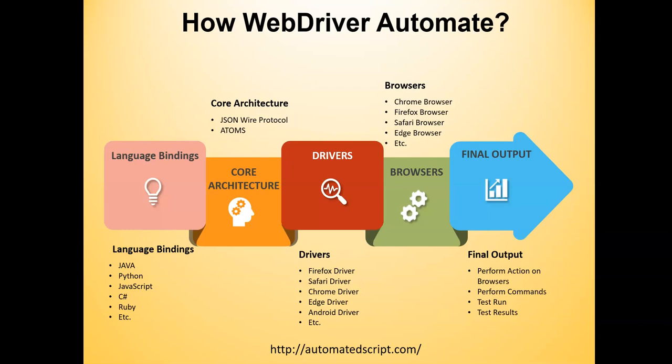Then we have the core architecture, which holds your JSON Wire Protocol. The JSON Wire Protocol is a REST API protocol that all WebDriver server implementations adhere to and understand. Each of the queries and commands the automation tester writes using the Selenium client library are converted to HTTP requests, with the query or command as payload in JSON format, and sent to the WebDriver server.